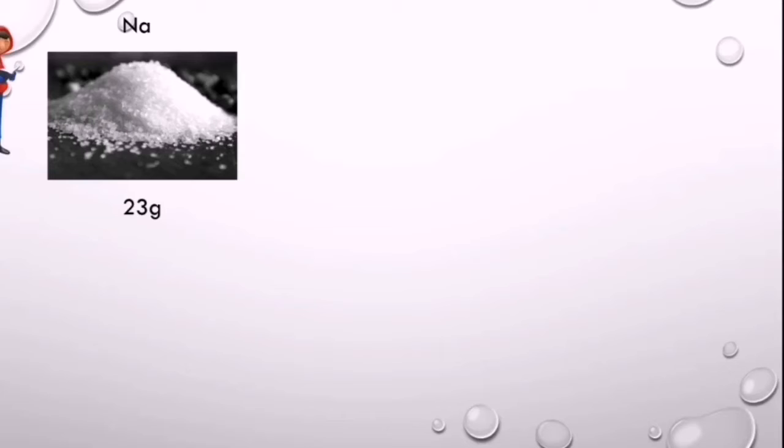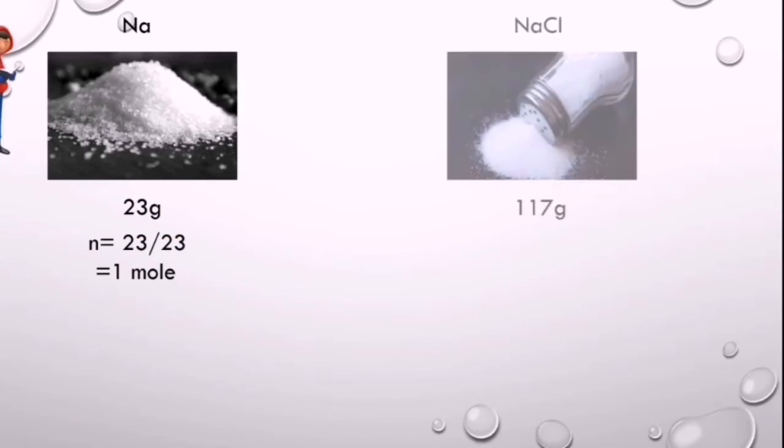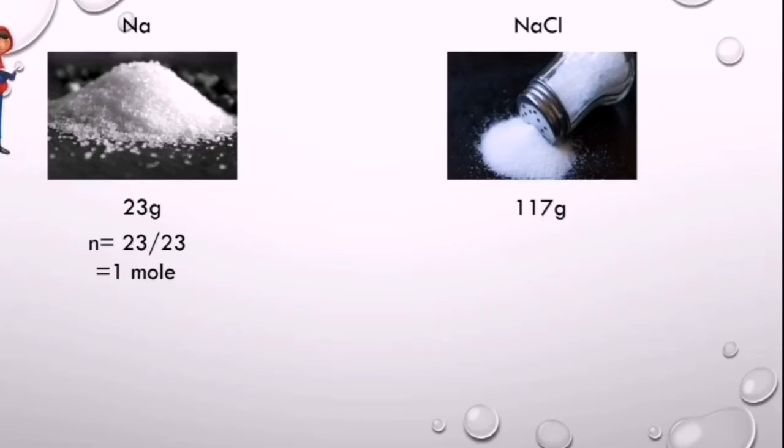What about 117 grams of salt? How many moles is that? When you have a compound with more than one element, calculate the individual gram atomic mass multiplied by the number of atoms. Here we have one sodium atom with gram atomic mass 23, and chlorine has 35.5, so 23 plus 35.5 makes 58.5.